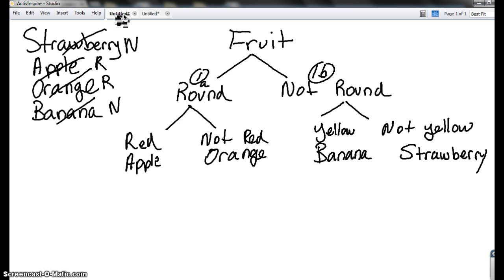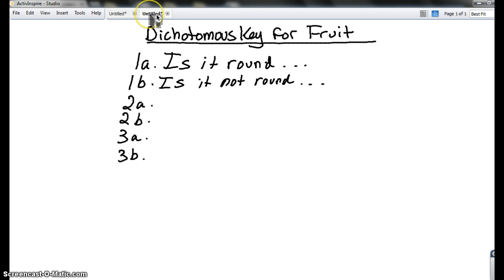Alright. So, now we're going back to our flowchart. Where is question 2 coming from? We can go either direction. Which one do you want to choose? Red, not red. Alright. We're going to go red and not red. So, 2A, 2B. Go back to our chart. Is it red? And what was the other one? Is it not red?